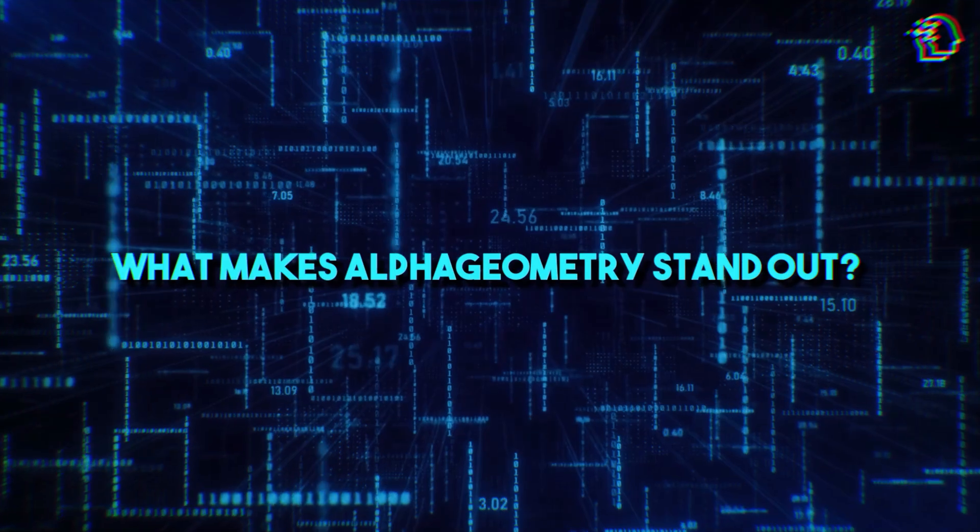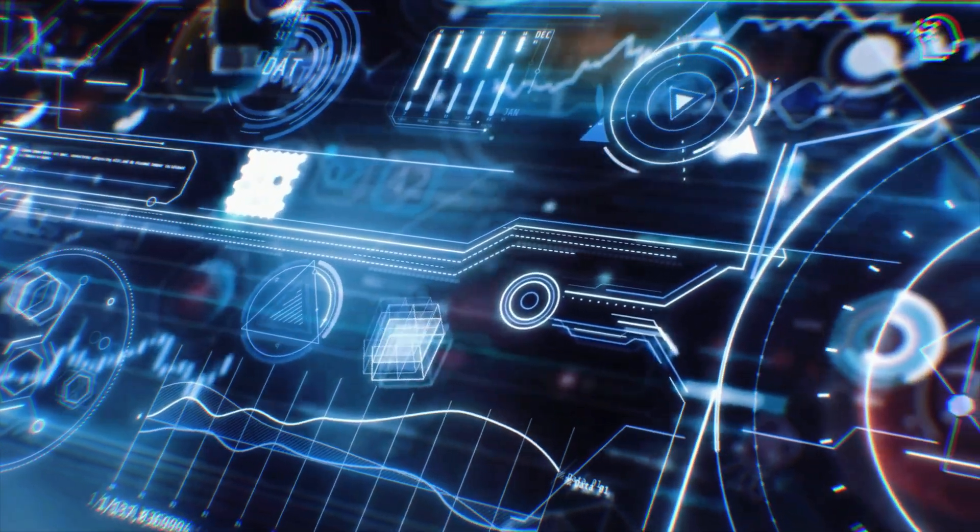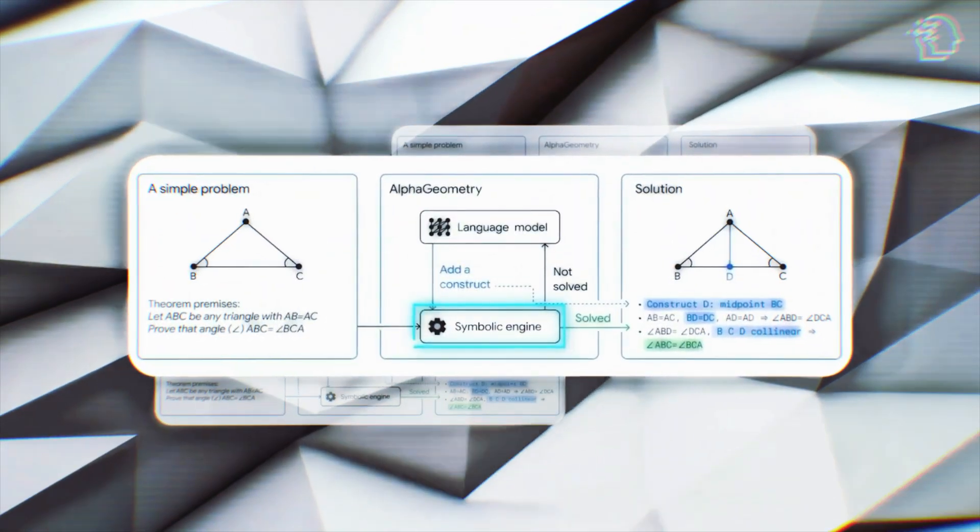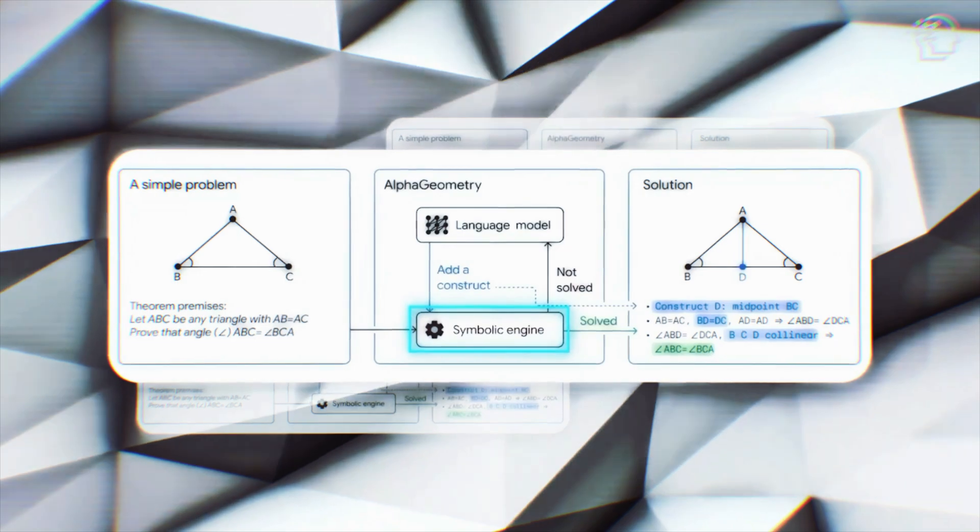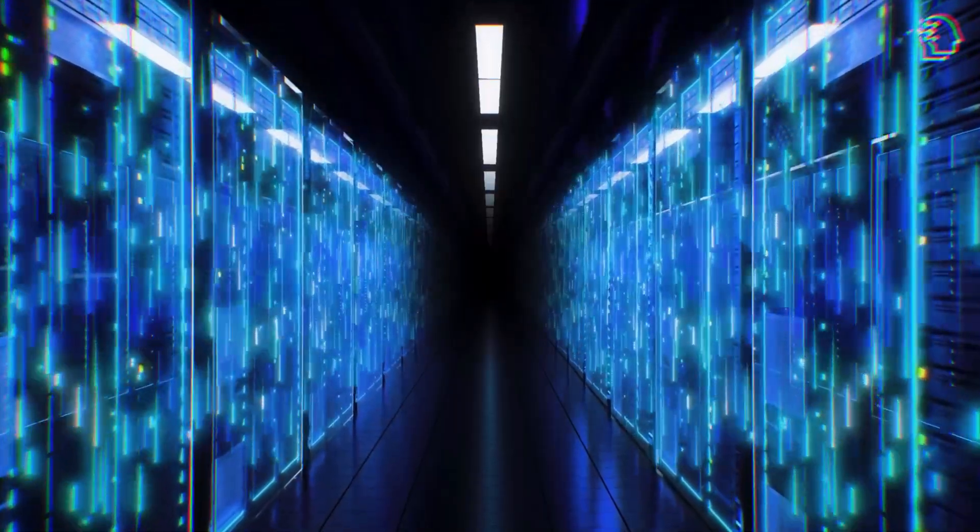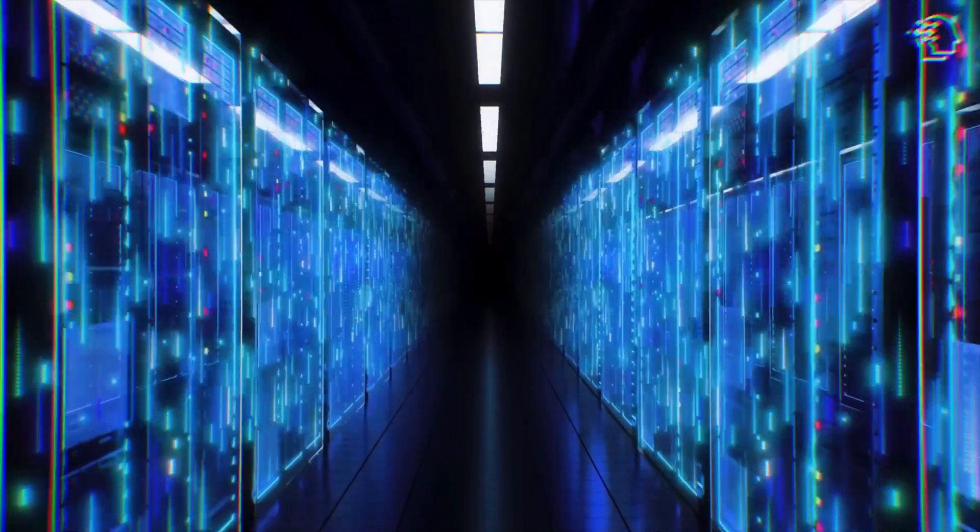So, what makes AlphaGeometry stand out? It's all in its cutting-edge architecture. This AI blends a neural language model with a symbolic deduction engine, making it a powerhouse in deciphering and solving complex geometry theorems. It's like combining the brain power of a creative genius with a logic-driven supercomputer.